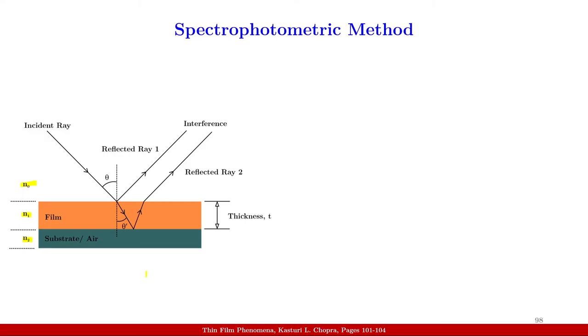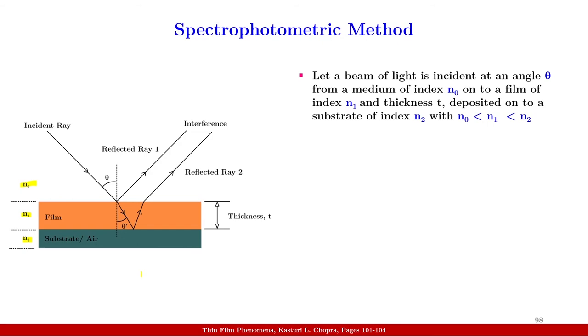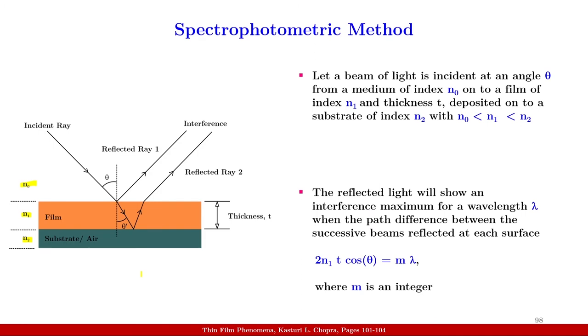N0 corresponds to the refractive index of air, N1 that of the film and N2 that of the substrate. If the substrate is air, then N2 is taken to be N0. We consider a beam of light that is incident at an angle theta from a medium of refractive index N0 onto a film of index N1 and thickness t that is deposited onto a substrate of index N2 with N1 between N0 and N2. The reflected light will show an interference maximum for a wavelength lambda when the path difference between the successive beams reflected at each surface, that is 2N1t cos theta equal to M lambda where M is an integer.